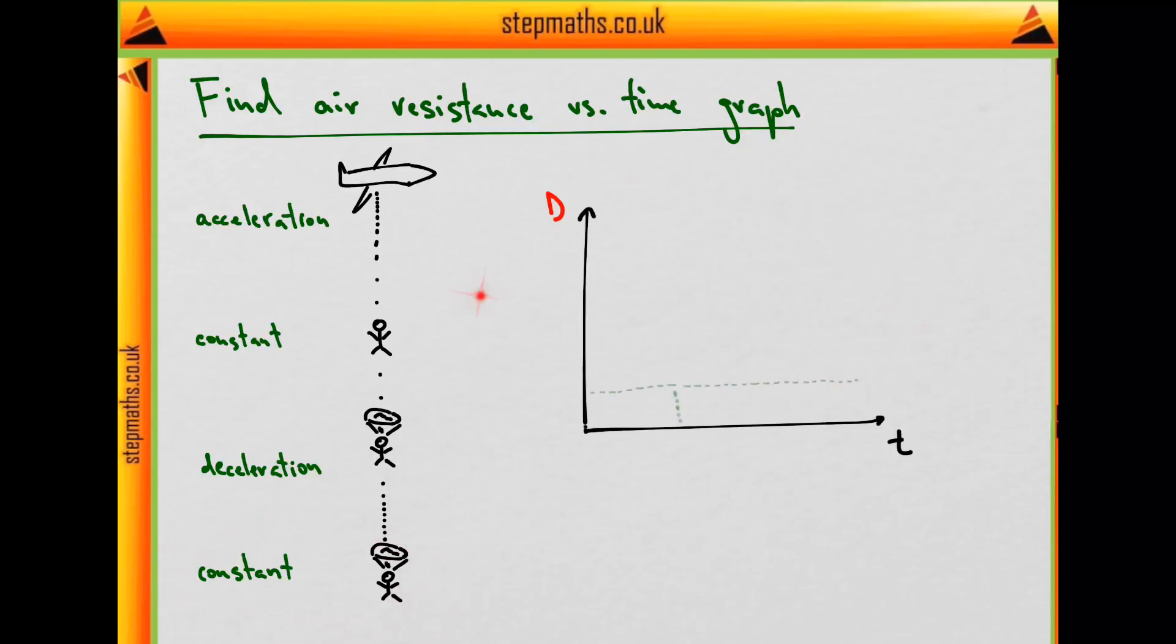So let's start drawing our graph of drag against time. The weight of the parachutist stays constant throughout the motion, but as we'll see, the force of drag will be changing.